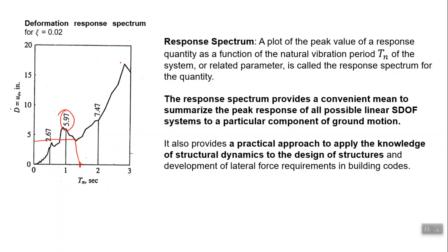Once you have this black line for a particular earthquake, you can directly tell for any new structure. For example, one bridge is somewhere here — you directly pick that number and tell that it will experience 14 inches in that earthquake. For multiple degree of freedom systems, this curve becomes the basis of a very detailed and conceptually elegant seismic analysis procedure called response spectrum analysis.